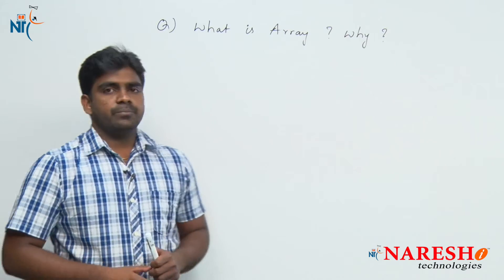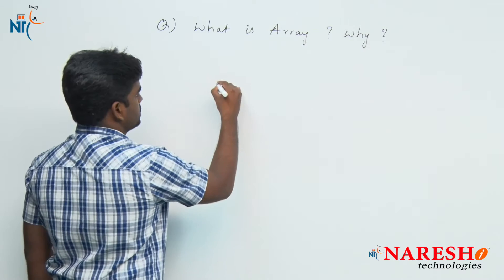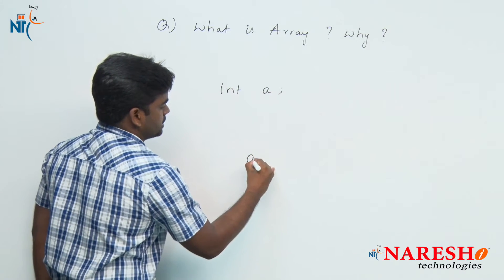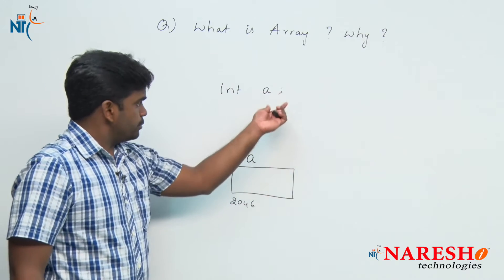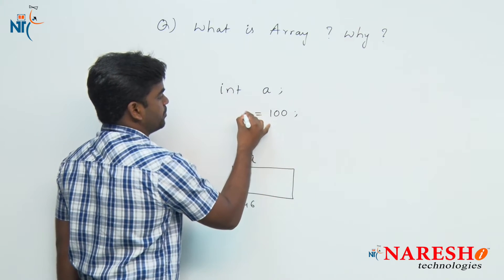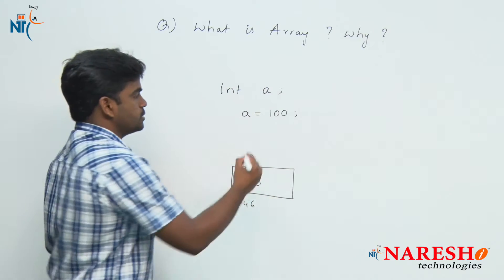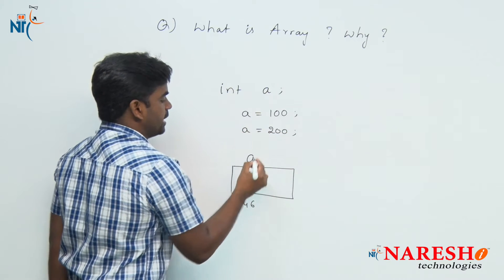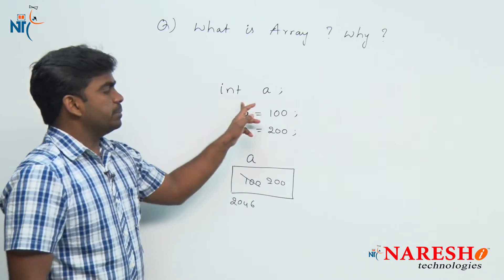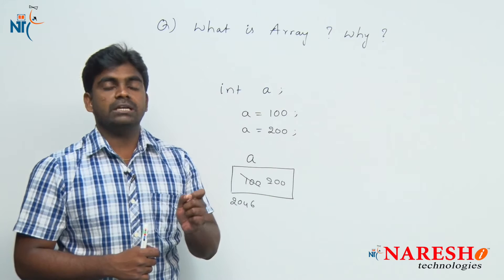It's very simple. Generally, if you want to store elements, we use primitive types. Suppose I'm declaring one primitive variable a, then a gets memory allocation at some location. If you want to store any value into a, suppose 100, we initialize it and that 100 will store into a. If I want to store one more element, when we try to store it, the existing element is replaced with the new element. The drawback of primitive variables is you can store only one element at a time.